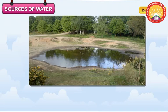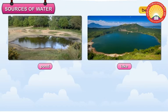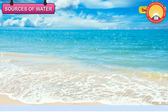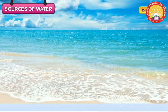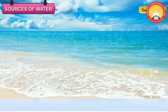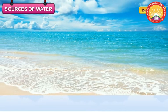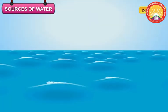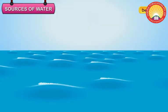A pond is a small body of water which is surrounded by land. A pond is smaller than a lake. Oceans and seas are very large bodies of water — they have salty water. When rivers carry only rainwater, they are called rain-fed rivers.